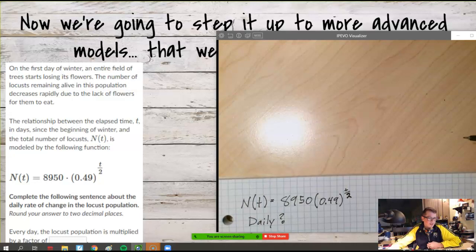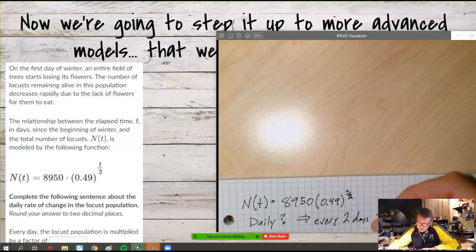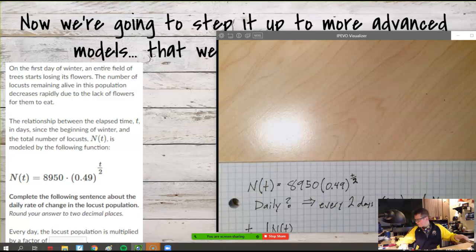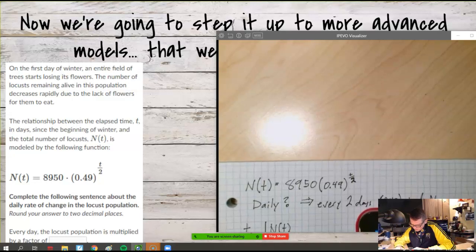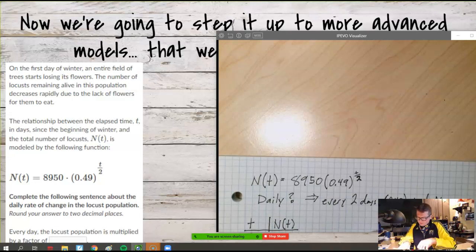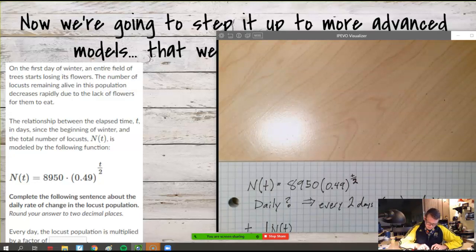Alina rejoined — welcome back. We're all looking at this problem trying to figure out: how do we determine the daily change when we know that every two days 0.49 is our factor? A table can be helpful here. If every two days leaves 0.49 of what we started with, we need the one-day factor.